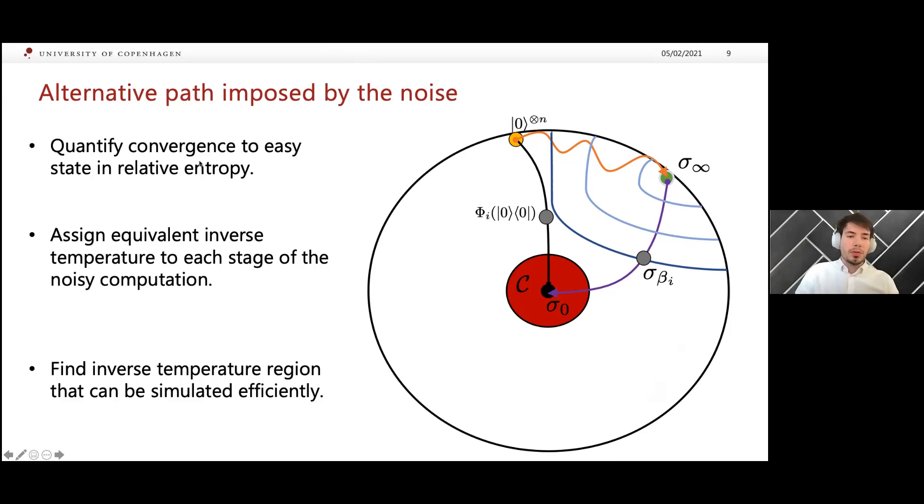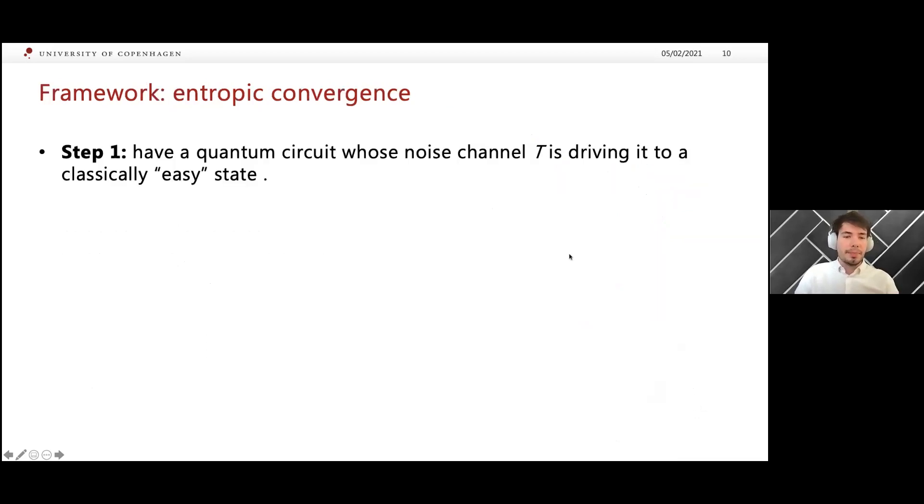What we show is that if you can quantify how fast this convergence is happening in relative entropy, then you can assign an inverse temperature for each stage of the noisy quantum computation with the promise that sampling from that Gibbs state will approximately perform as well as that noisy quantum computer. These lines here are energy levels. It is typically the case that for some inverse temperature range, you can efficiently sample from this family of Gibbs states. Whenever we enter this region over here, you can also obtain similar performance by using a classical computer.